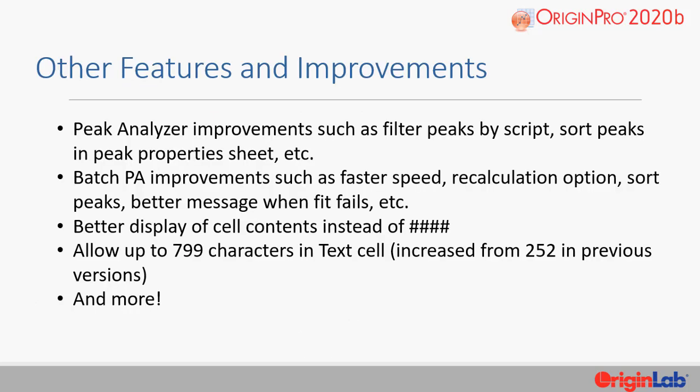Other new features and improvements include peak analyzer improvements such as filter peaks by script, sort peaks in a peak property sheet, etc. Batch peak analysis improvements include faster speed, recalculation options, sort peaks, and better message when fit fails. Additionally, there is better display of cell contents instead of hashtag marks, and up to 799 characters are now allowed in a text cell, increased from 252 in previous versions.